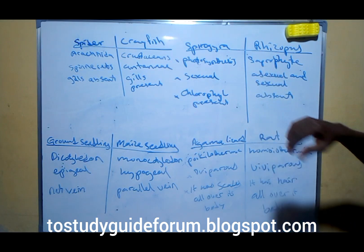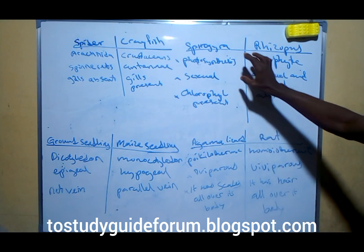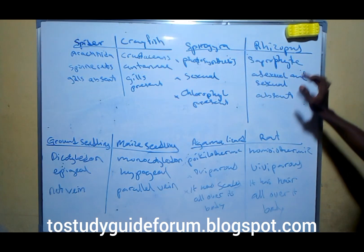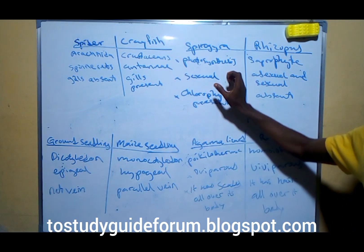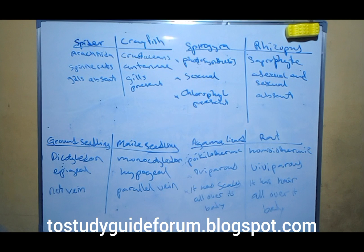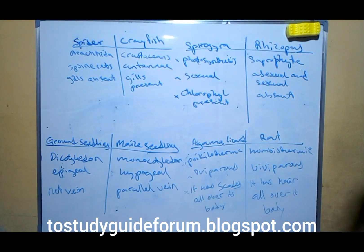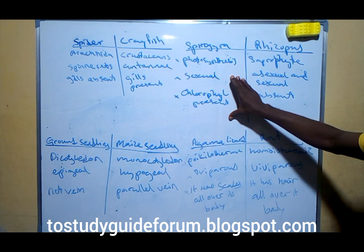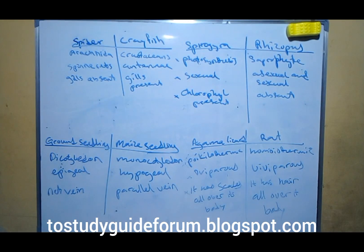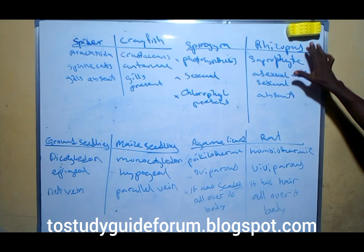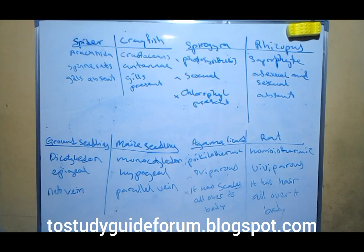Coming back to the spirogyra — the mode of nutrition is by photosynthesis. This other one is a saprophyte. Reproduction here is asexual, while this other one is asexual and sexual. For the spirogyra, chlorophyll is present, meaning that is why it carries out photosynthesis. While in this other organism, there is no chlorophyll.